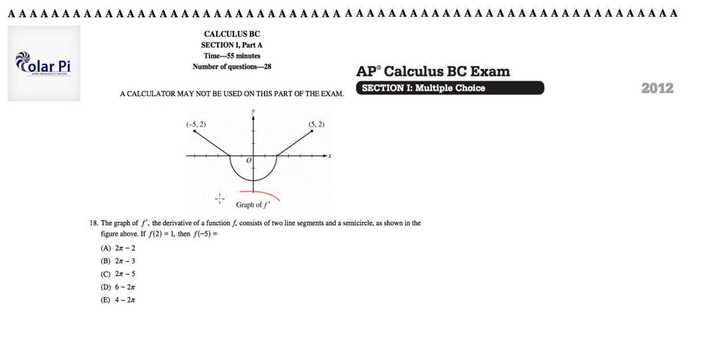First of all, I'm given f prime and I'm being asked about the values of f. Second of all, I'm given this initial value, but I'm asked for f of negative 5. I know that the only way I can go from f prime to f is if I integrate.